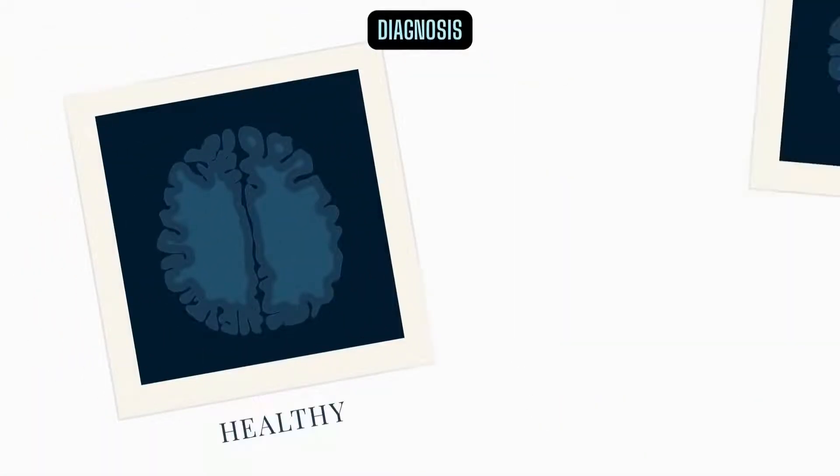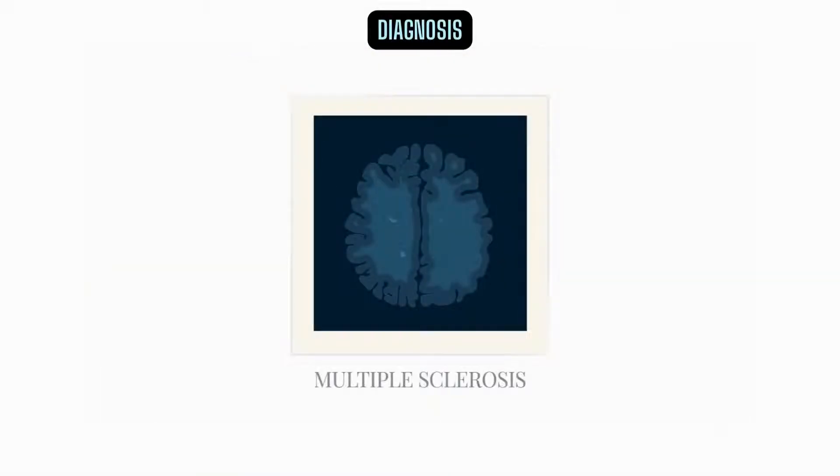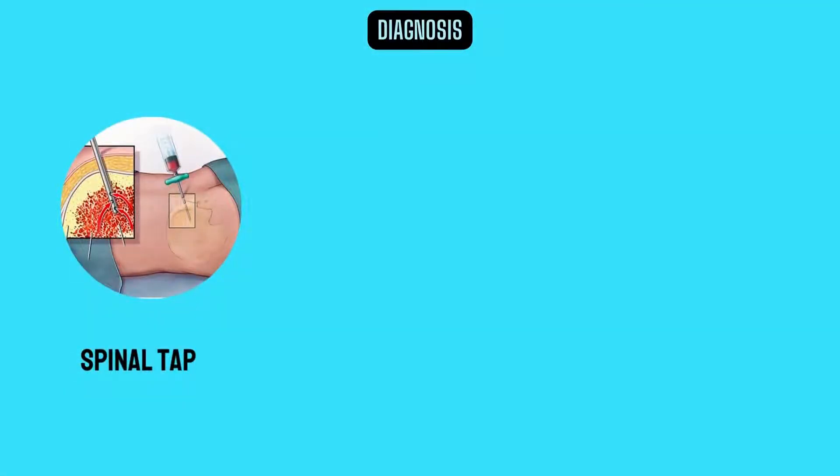There is no specific test to rule out MS and it requires ruling out similar conditions before diagnosis of multiple sclerosis. Few tests may include spinal tap, in which a small sample of cerebrospinal fluid is removed from your spinal canal for laboratory analysis. This sample can show abnormalities in antibodies that are associated with MS. A spinal tap can also help rule out infections and other conditions with symptoms similar to MS.